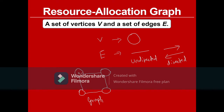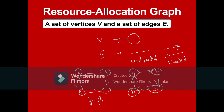For example, we can have four vertices named A, B, C, D and four edges. This is an undirected graph because there are no directions given to its edges. We can also have directed edges in the graph, making it a directed graph because every edge has a direction.